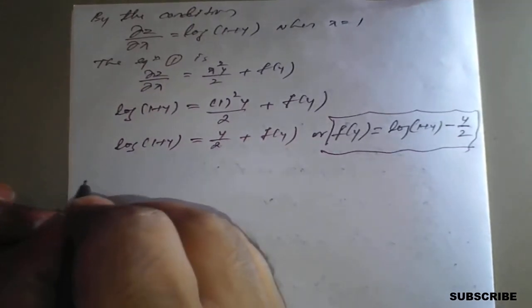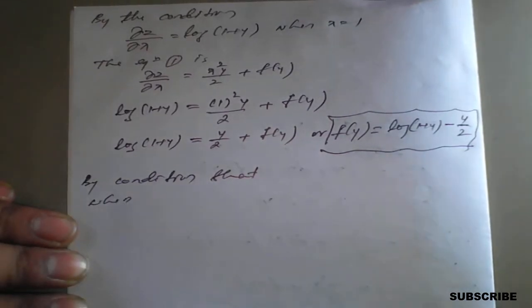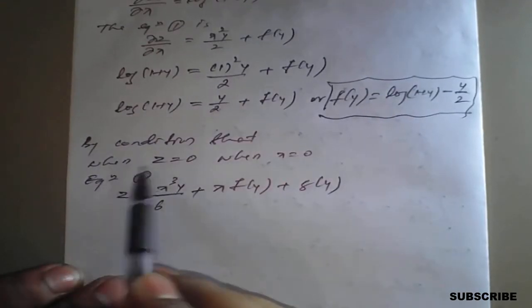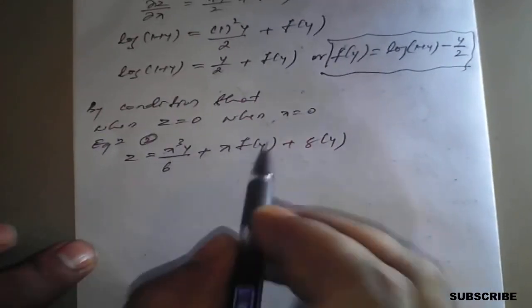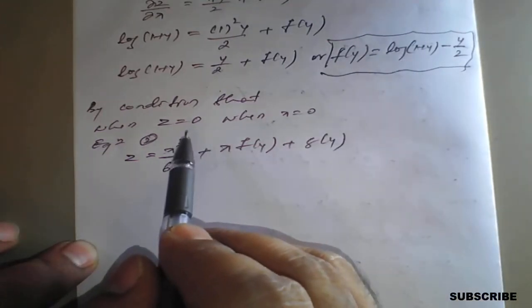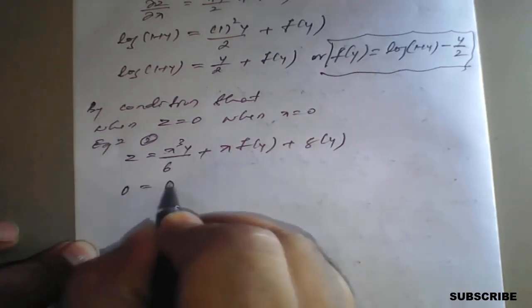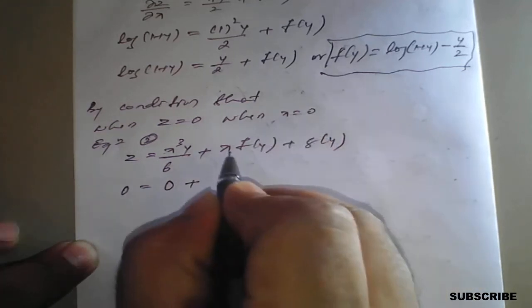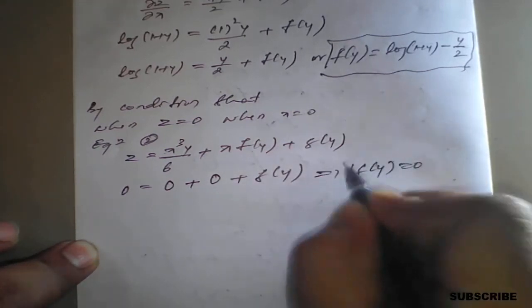Similarly, applying the second condition: z = 0 when x = 0. Substituting into Equation 2: 0 = (0)³·y/6 + 0·f(y) + g(y). Every term with x becomes 0, so we conclude that g(y) = 0.